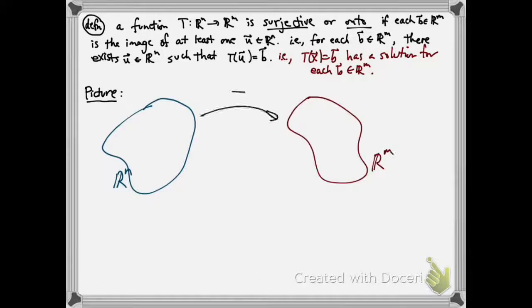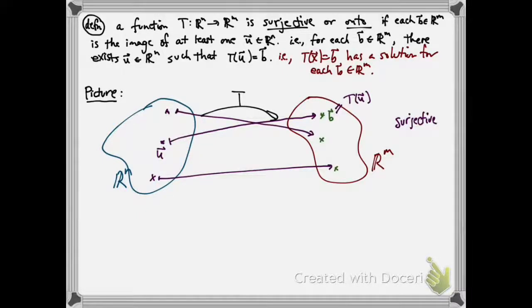So let's draw a picture to see what's going on. So here's my point b in Rm. If t is surjective, that means there exists a point u such that t of u equals b, so that b is in the image of t. And so this is going to be true for any point in Rm. This would be a picture of something surjective.